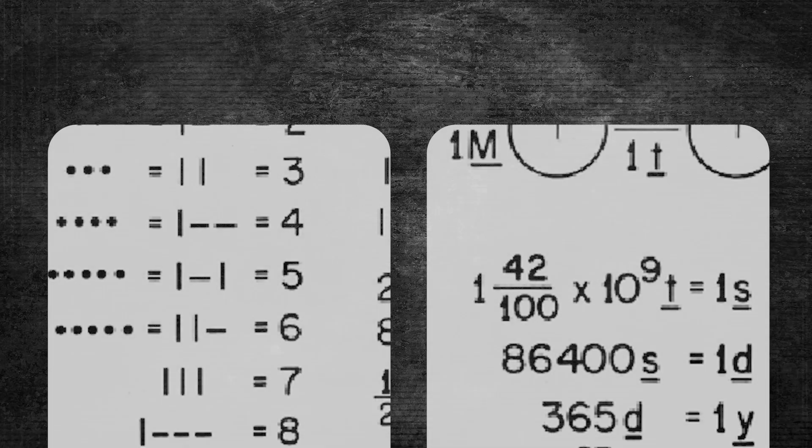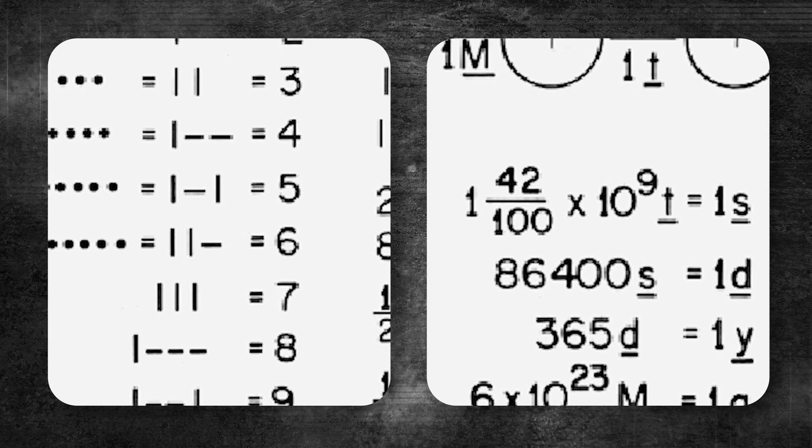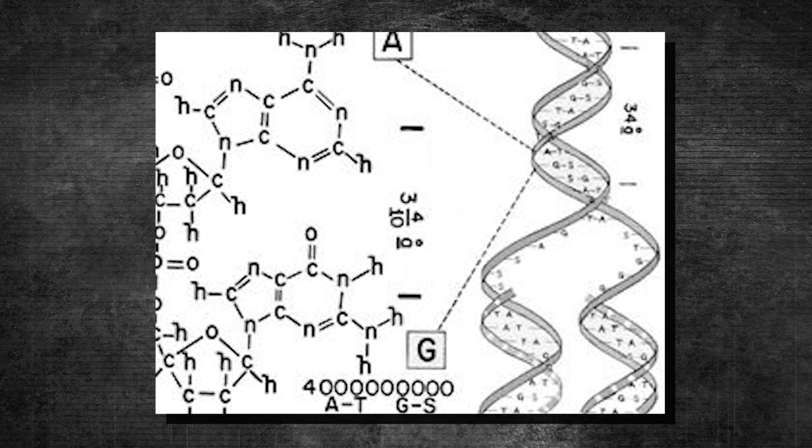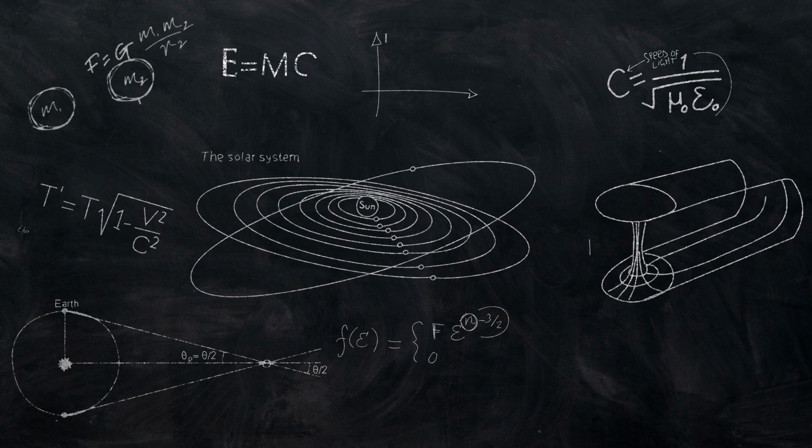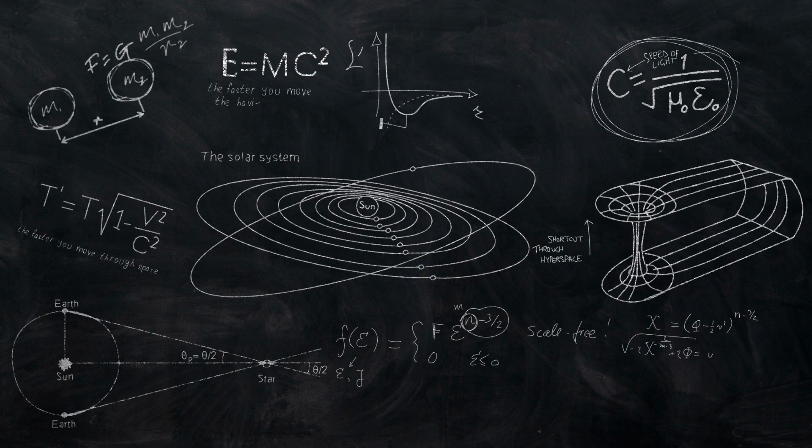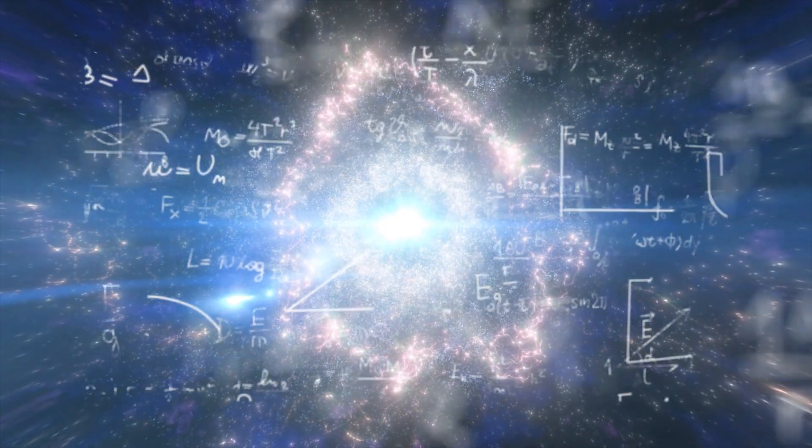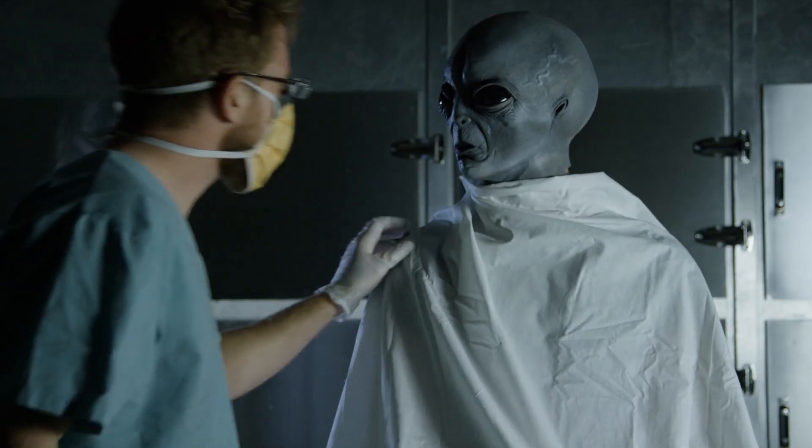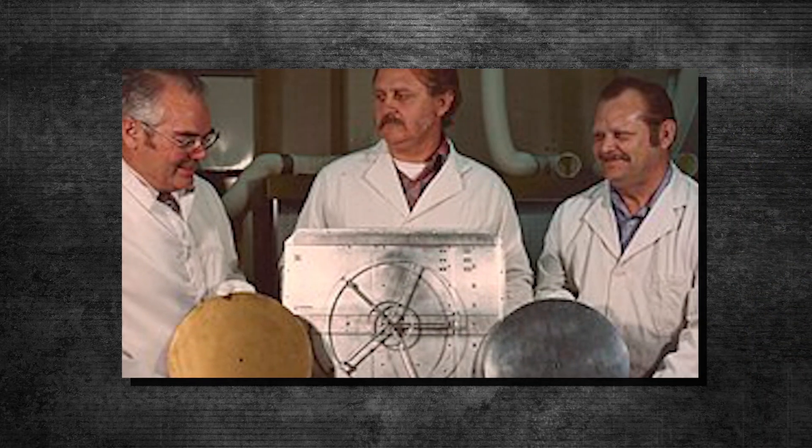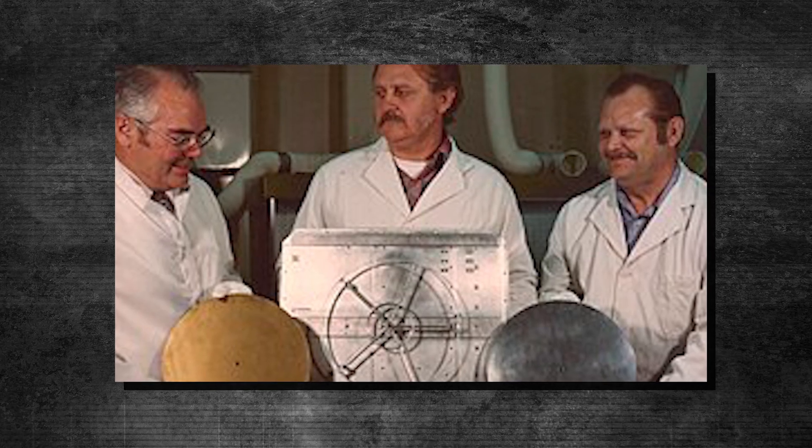The golden records also include important information about math and science. This information, like details about our solar system and DNA, was included in the hopes that any intelligent life would be able to understand it. Scientists believe that math and science are universal languages that could be understood anywhere in the universe.